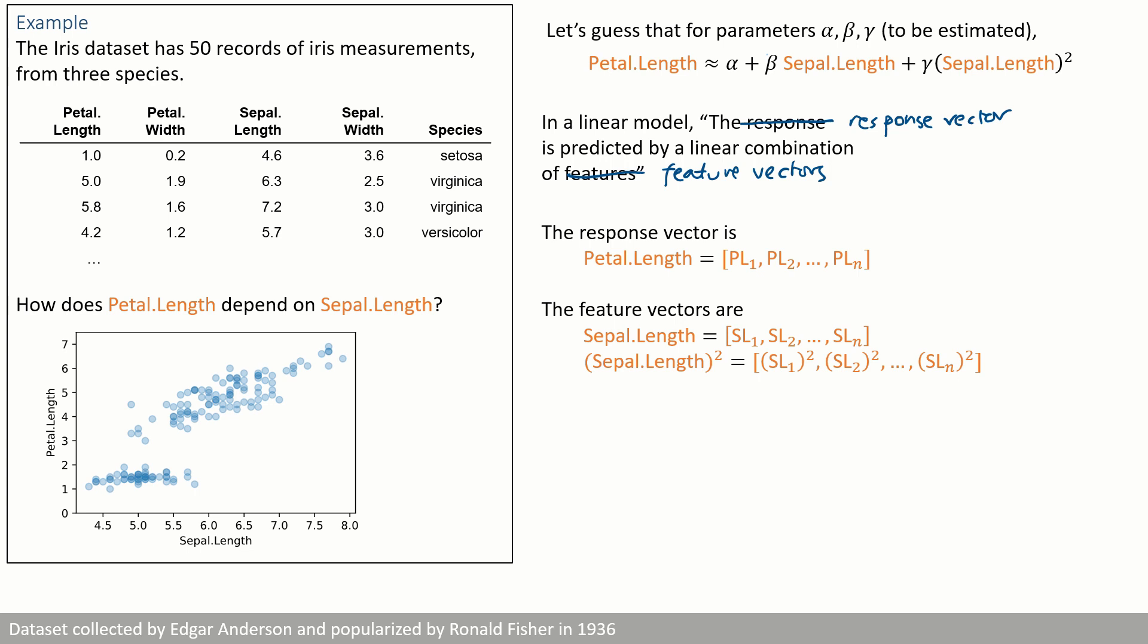What I mean by response vector is the vector of all of the responses, the entire petal length column from the data set, all n equals 50 of them in this particular data set. And the feature vectors here are sepal length, another entire column from the data set, and sepal length squared, which just means pointwise operation on each of the values in the sepal length column.